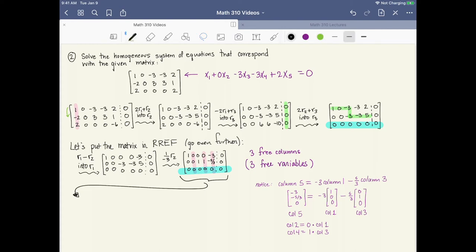And if I rewrite this as a system of equations, this is going to look like x1 plus a bunch of zeros, and then minus 3x5 equals zero. From the second row, I'm going to get x3 plus x4 minus 5 thirds x5 equals zero. And then the last equation is just zero equals zero.